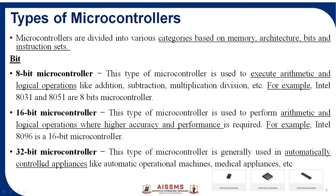Nowadays, 32-bit microcontrollers are generally used in automatically controlled appliances — for example, washing machines, medical appliances, TV, and cameras. So everywhere, 32-bit microcontrollers are used. 32-bit and 64-bit are the latest microcontrollers. Generally, the bit width suggests the performance and how much data they can carry, as indicated by 8-bit, 16-bit, and 32-bit microcontrollers. We will learn this in detail in the memory organization topic.